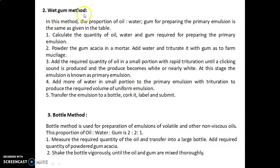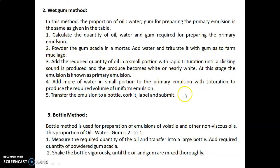The second method is the wet gum method. In this method, the proportions of oil, water, and gum for preparing the primary emulsion are the same as in the table. First, powder the gum acacia in a mortar, add water and triturate to form mucilage. Then add the required quantity of oil in small portions with rapid trituration until a clicking sound is produced and the product becomes white or nearly white — this is the primary emulsion. Add more water in small portions with trituration to produce the required volume of uniform emulsion, then transfer to a bottle, cork it, label, and submit.